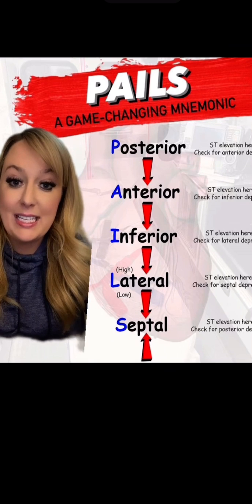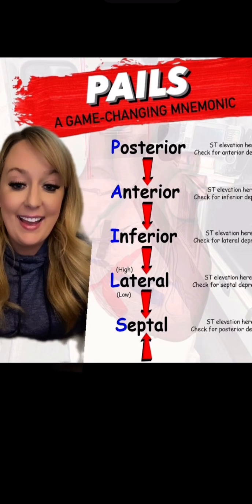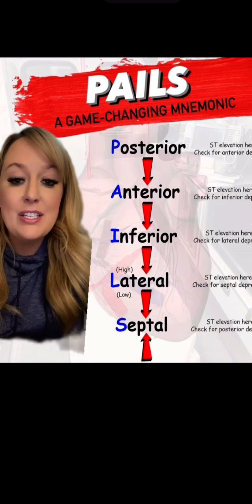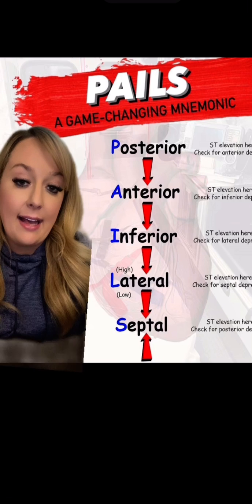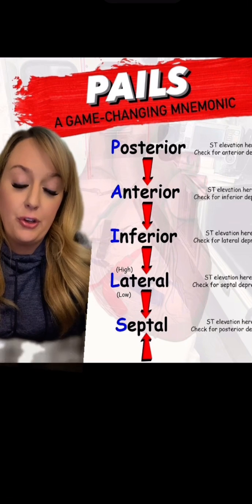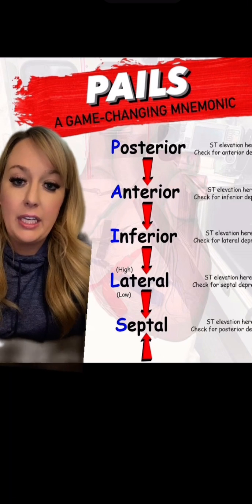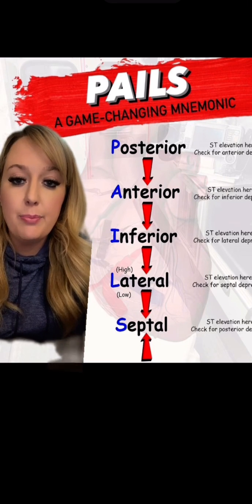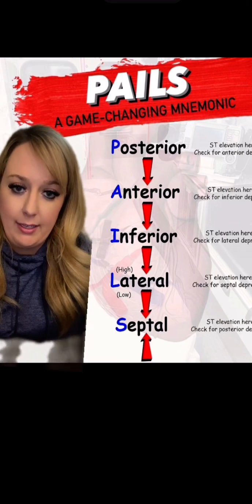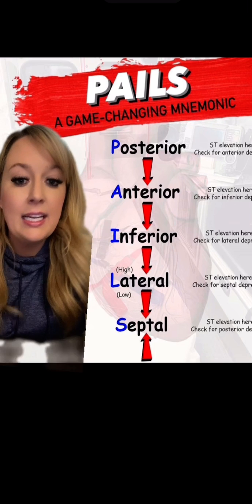Here's the breakdown of PAILS — it's P-A-I-L-S. For example, if you were to see ST elevation in your posterior leads, you would check for reciprocal depression in your anterior leads.